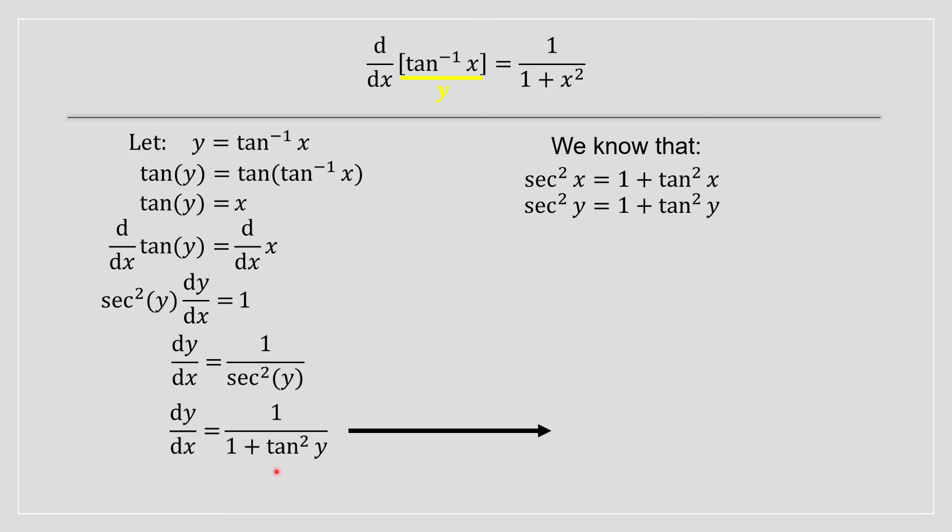The last step is a simple replacement: x equals tan(y), which comes from our earlier step. That's why when you take the derivative of arc tangent of x, you obtain 1 divided by 1 plus x squared.